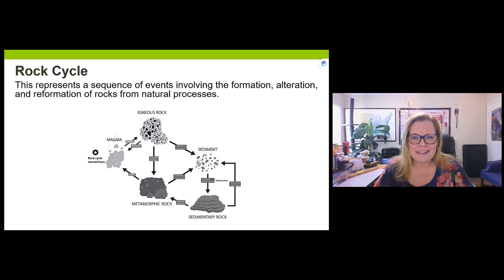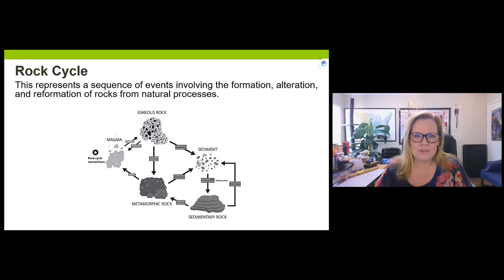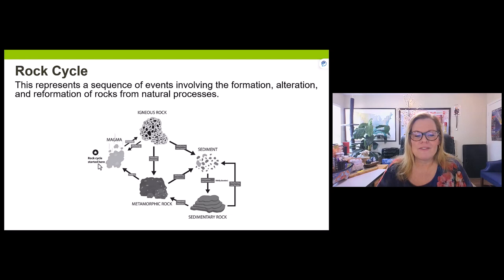All of this is important to understanding the rock cycle, because when you scroll back to the beginnings of planet earth, we were a molten planet. It would take hundreds of millions of years before we got that first crustal outer shell. Once that happened, we could start plate tectonics and the various rock types. But since it was molten, the rock cycle started right here — at magma. Magma is molten rock.